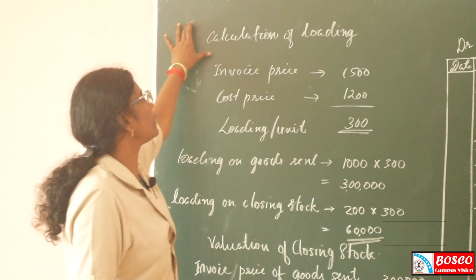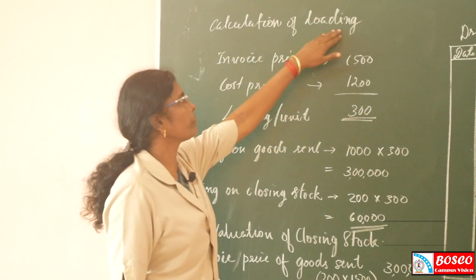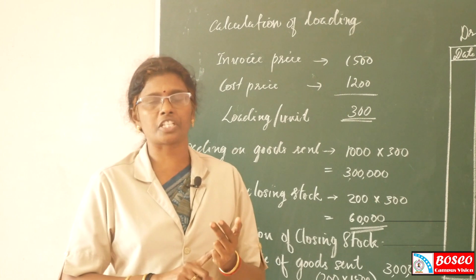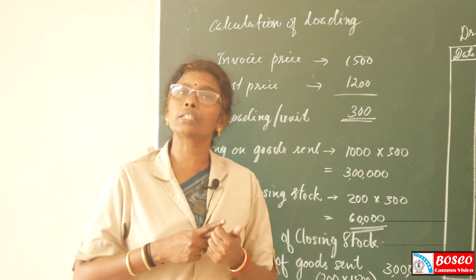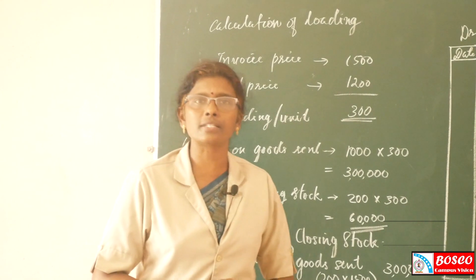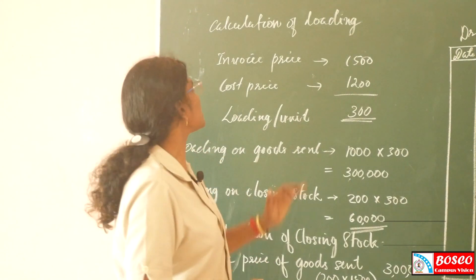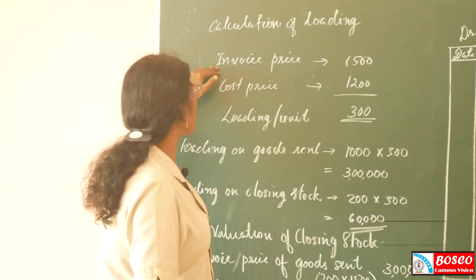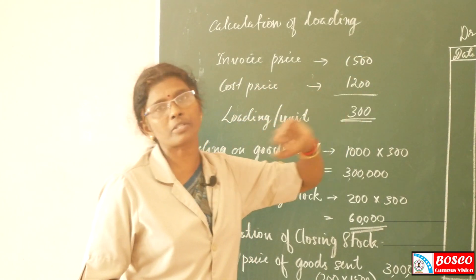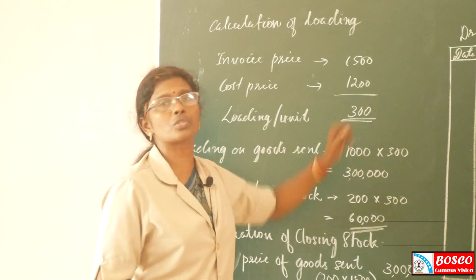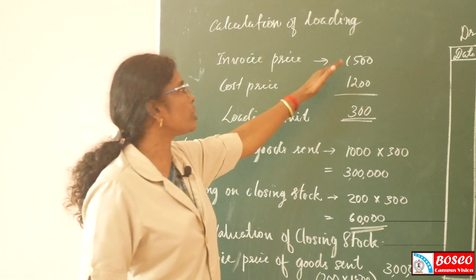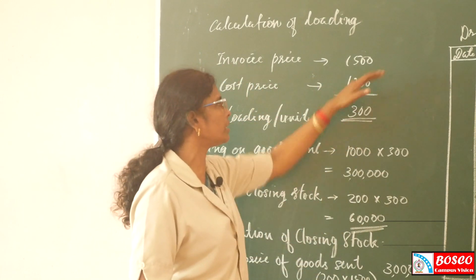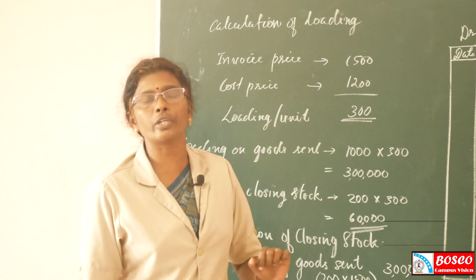First we discuss how to calculate loading. Loading affects the goods sent — that means opening stock, closing stock, goods sent, and goods returned. The loaded price is invoice price minus cost price. Invoice price minus cost price is the loaded price or profit. Rs.1500 minus Rs.1200 — the difference of Rs.300 is the loading per unit or profit per unit.